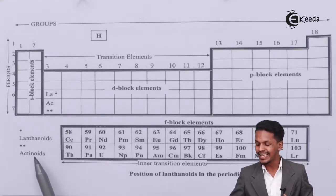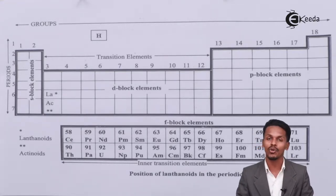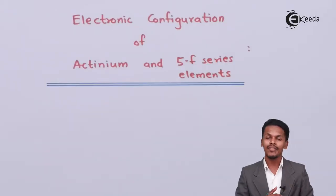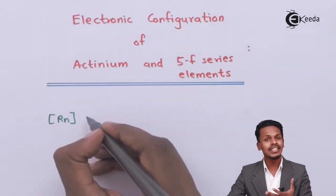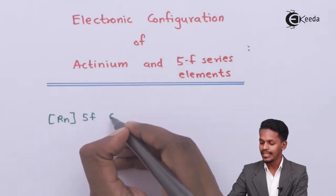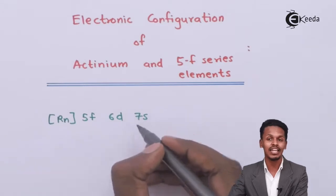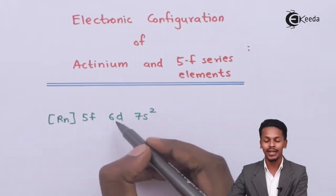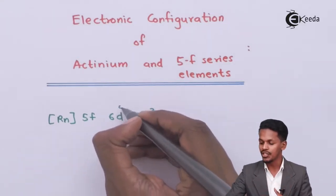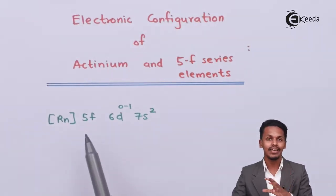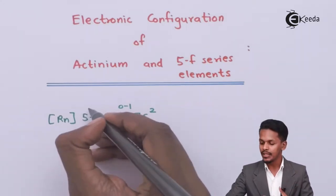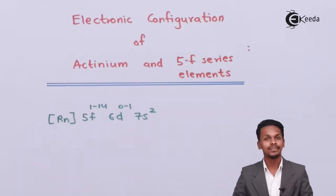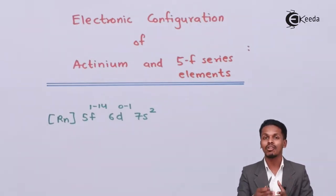Now let us discuss the general electronic configuration of actinium as well as the actinoids. Since it is a 5f series element, it will have 5f, 6d, and 7s orbitals. The 7s orbital is completely filled with two electrons. The d orbital can accommodate 0 to 1 electron, and the f orbital can hold 1 to 14 electrons. There are also cases of abnormal electronic configurations.